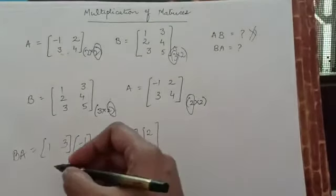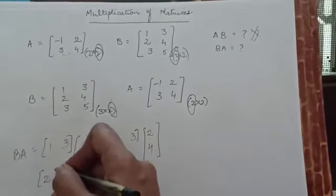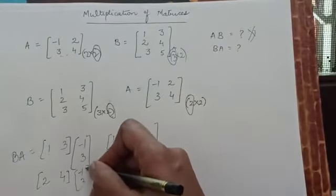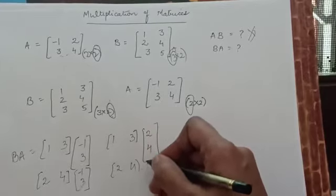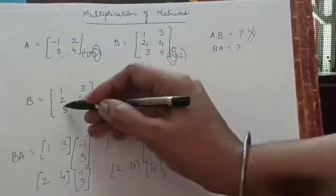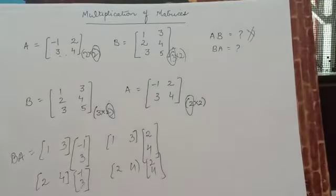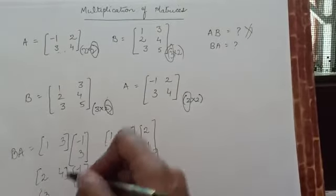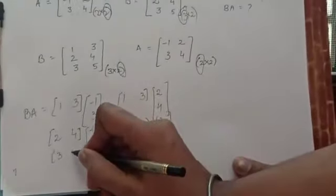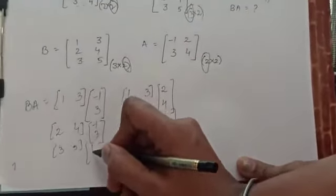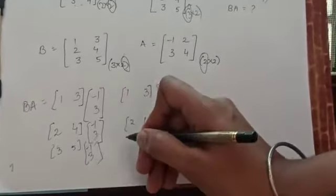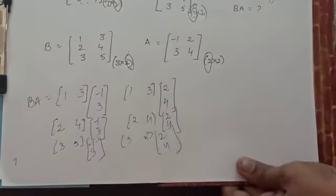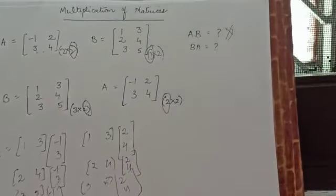Moving on, we take the second row of B — which is 2, 4 — and multiply it with the first column minus 1, 3, and then with the second column 2, 4. For the third row of B — which is 3, 5 — we multiply with the first column minus 1, 3, and then with the second column 2, 4. This is how you write out the entire multiplication process.